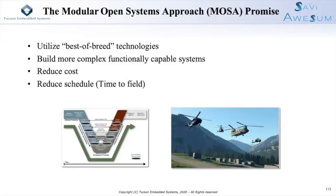The other promise is reduced cost and hopefully a reduced schedule. One of the interesting problems is there is a certain complexity that arises from disparate systems. When you specify every single piece of a component yourself, you can really make sure that the integration points are simpler. But when you purchase different existing components, then you have some complications there.